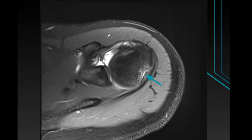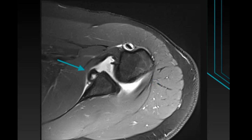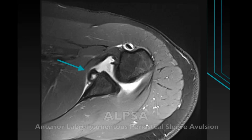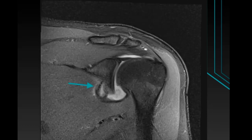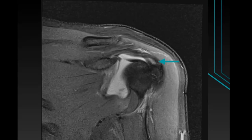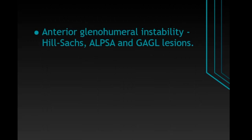Care should be taken not to follow the Hill-Sachs lesion below the level of the coracoid process, as the humeral head normally flattens out below. There is also a tear of the antero-inferior glenoid labrum with adjacent periosteum stripped, mildly lifted and displaced anteromedially from the anterior aspects of the glenoid, consistent with an ALPSA lesion or anterior glenoid avulsion. In addition, a partial thickness articular surface tear of the anterior-most fibers of the supraspinatus tendon is seen at the attachment site. To summarize, this case shows features of anterior glenohumeral instability with Hill-Sachs, ALPSA, and GARGLE lesions.